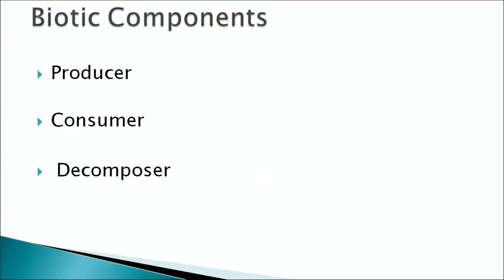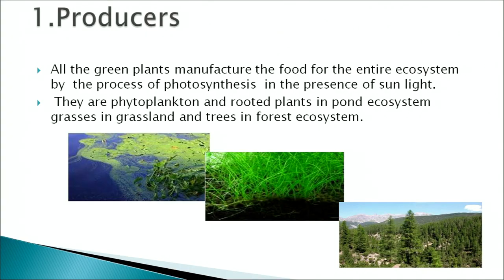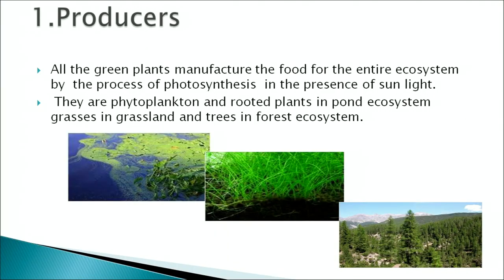The biotic components of an ecosystem are producers, consumers, and decomposers. Producers are all the green plants that manufacture food for the entire ecosystem through photosynthesis in the presence of sunlight. They are also called autotrophs. In an aquatic ecosystem they are phytoplanktons and rooted plants, and in the terrestrial ecosystem they are grasses in grasslands and trees in forest ecosystems. The autotrophs make the food for the consumers.